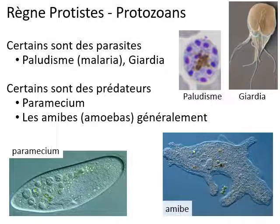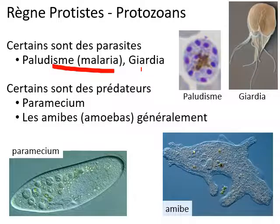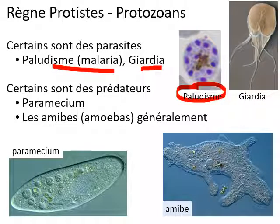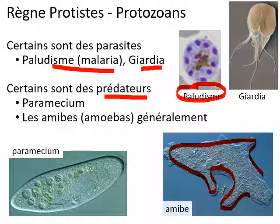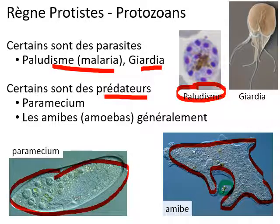Another type of protist that kind of acts like an animal is a protozoan. Some protozoans are parasites — they cause malaria or giardia. Here is the organism that causes malaria. Some protozoans are predators, like paramecium or amoeba. An amoeba eats its food by surrounding it with its body, and this body is a single cell. The paramecium is also a single cell, but it is a predator.